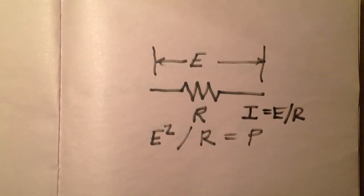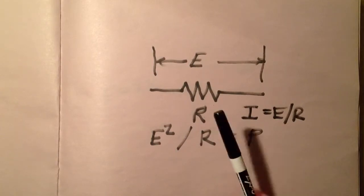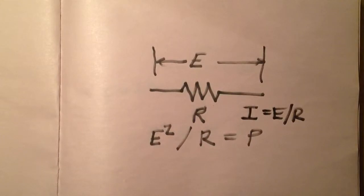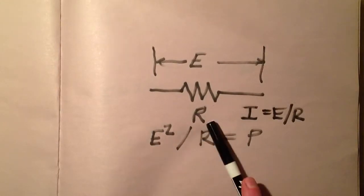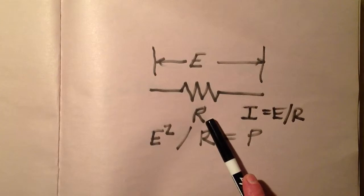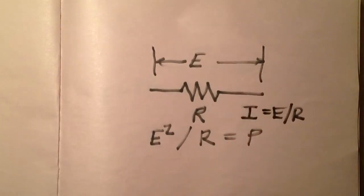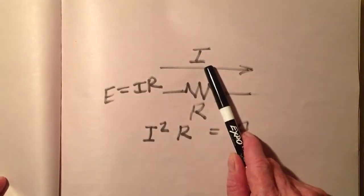Stan Jibalisco here. I would like to explain some characteristics of resistors — in particular, how to calculate how much power a particular resistor is dissipating, depending upon its value in ohms, its resistance R, and the voltage across it, E in volts, or the current through it, I in amperes.